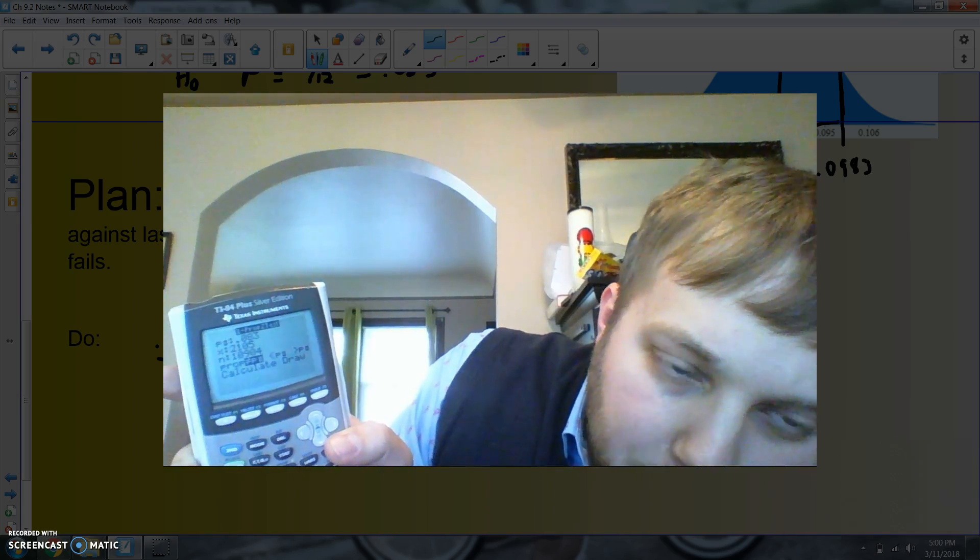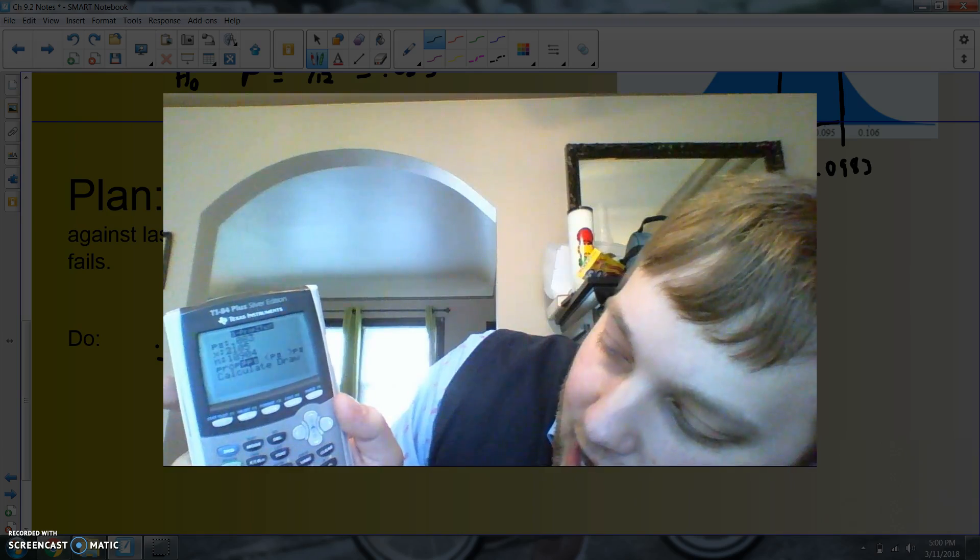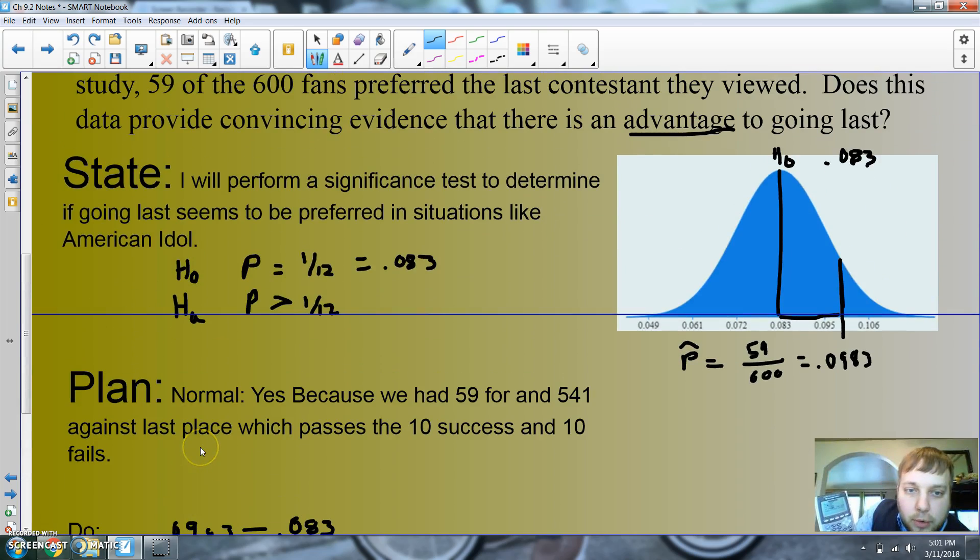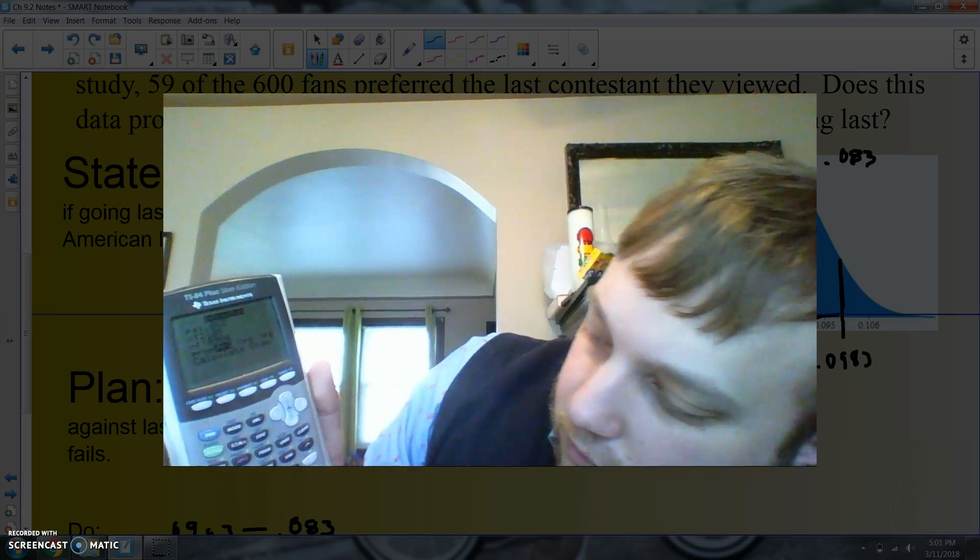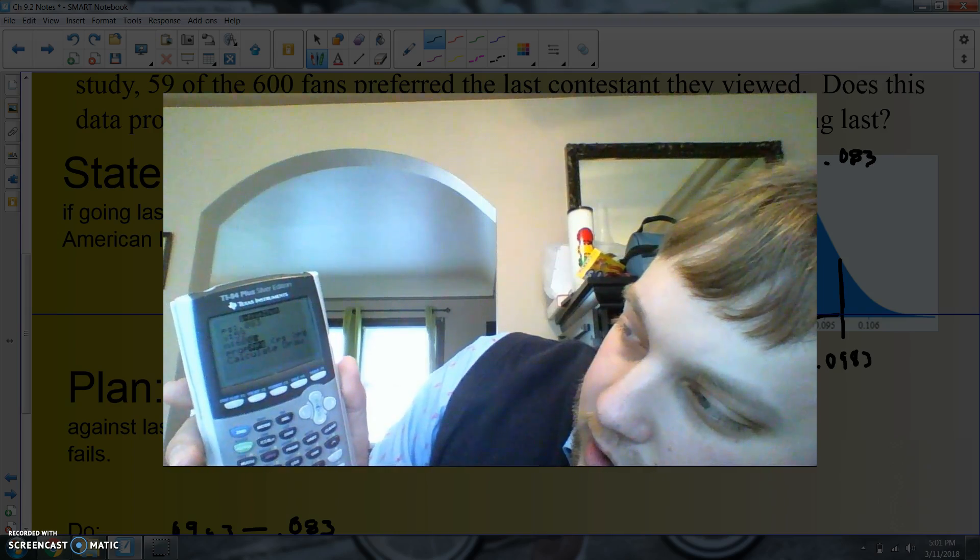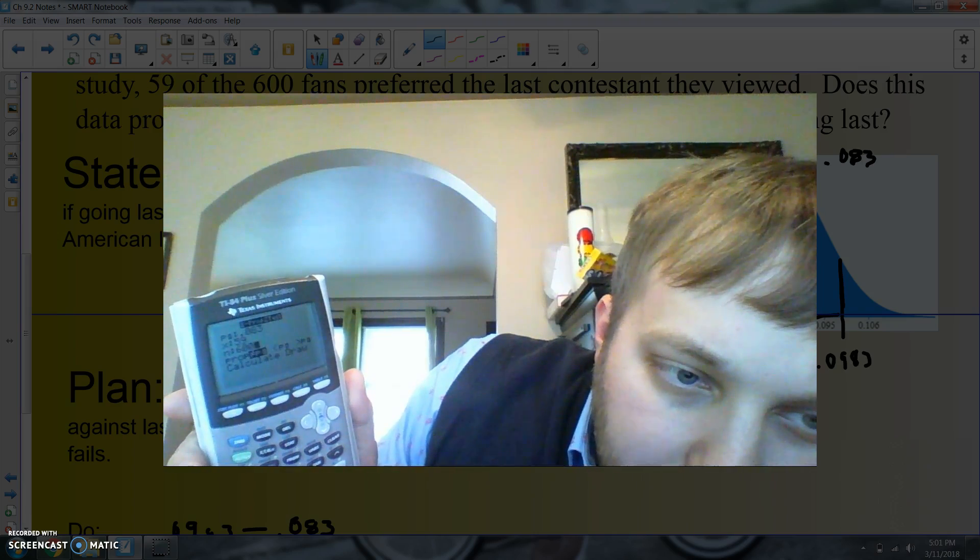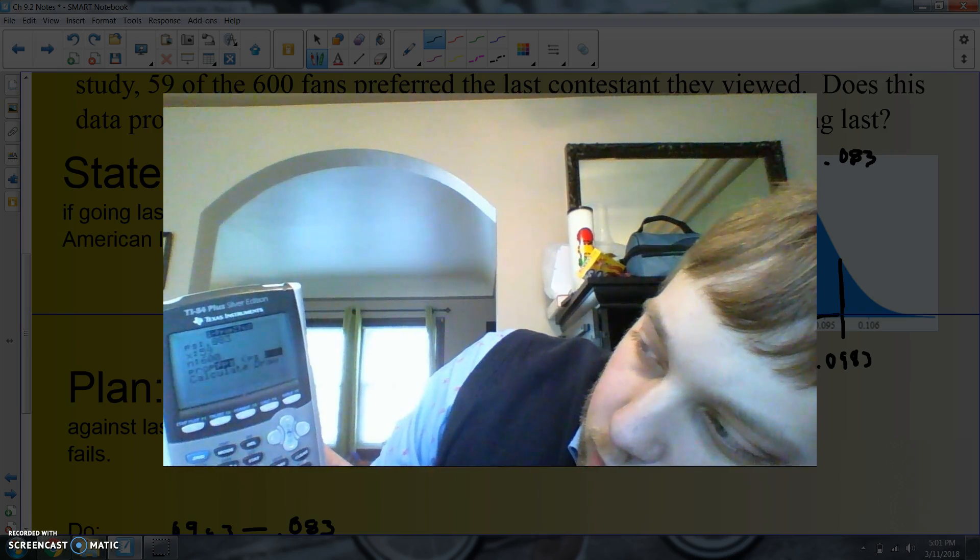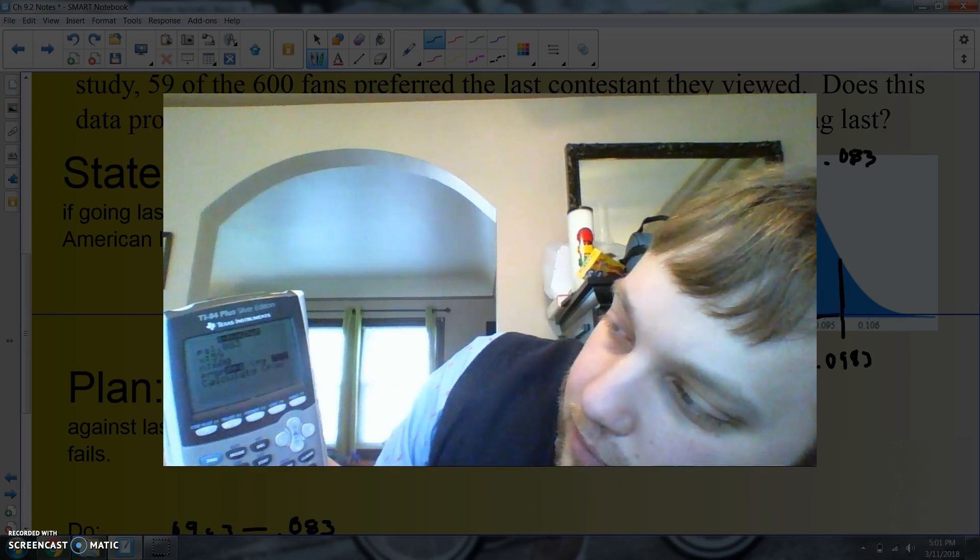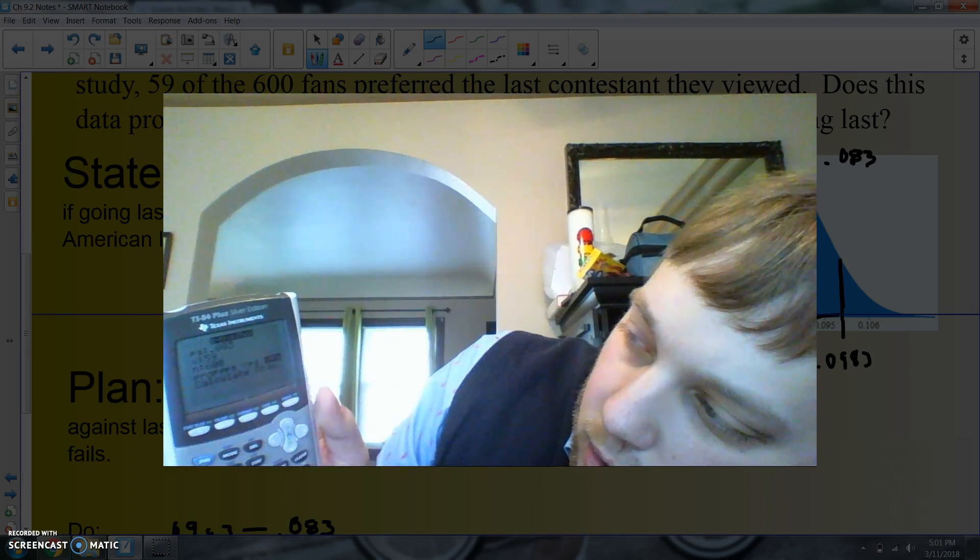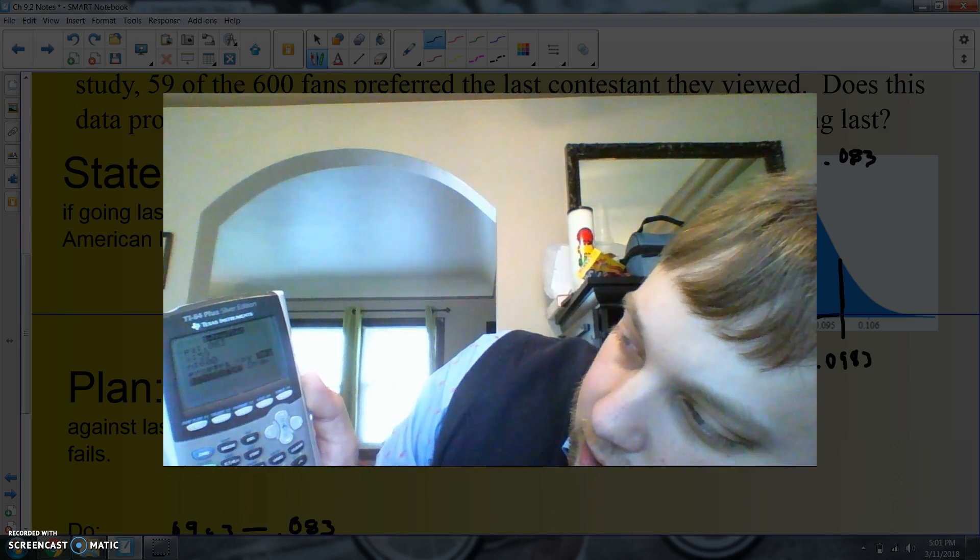That's my hypothesis. That's what that means: p0 is my hypothesis. Now I got, was it 59 out of 600? So I'm gonna put in 59 out of 600. So I'll be 59 on the top, 600, and then down here is where you choose what hypothesis do you want. And I want greater than. And I am going to go and calculate.